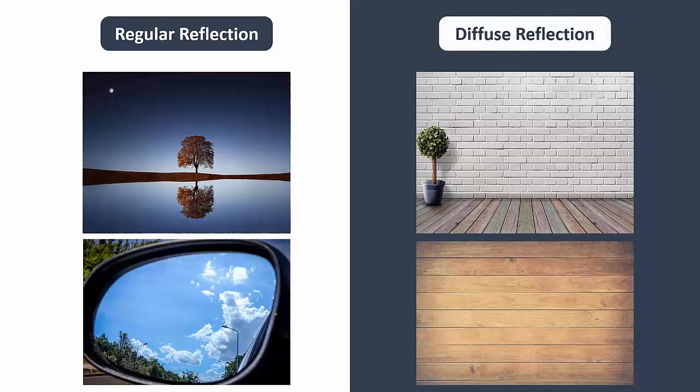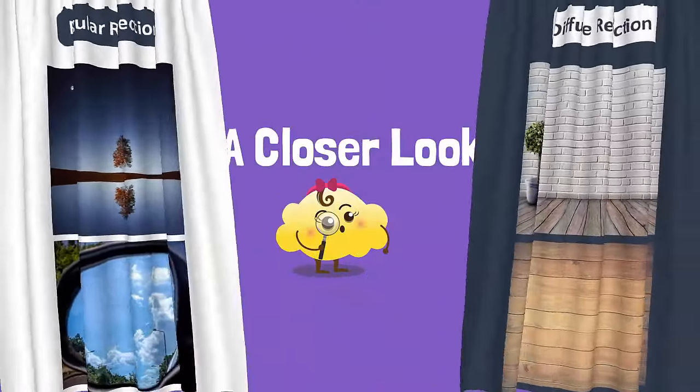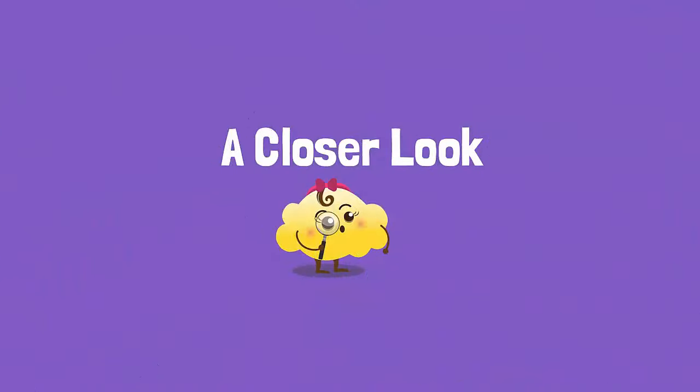Depending on the type of reflection, we are able or unable to see our reflection in certain objects. Let's have a closer look at the two types of reflections.